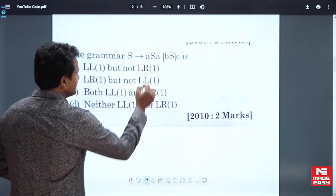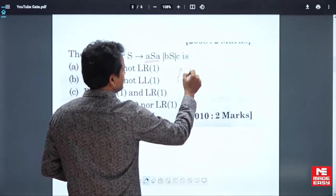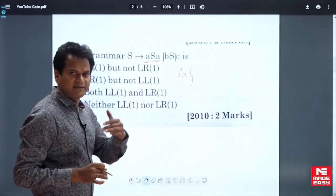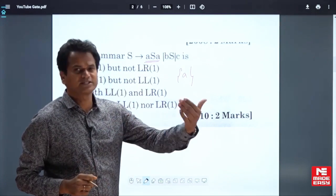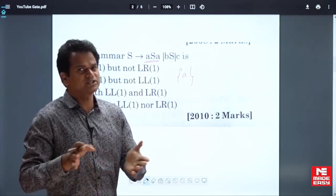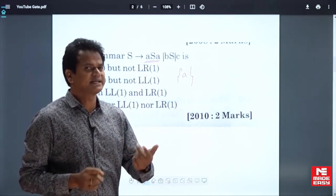If you look at this one, here what is the first of this one? First of aSa is a. So if any non-terminal is having more than one production, just find the first set of each of its productions. If they have disjoint first sets, then it is LL(1). Any common symbols in first sets, then it is not LL(1).